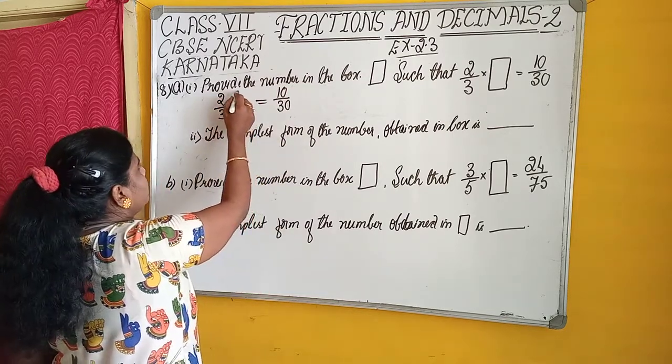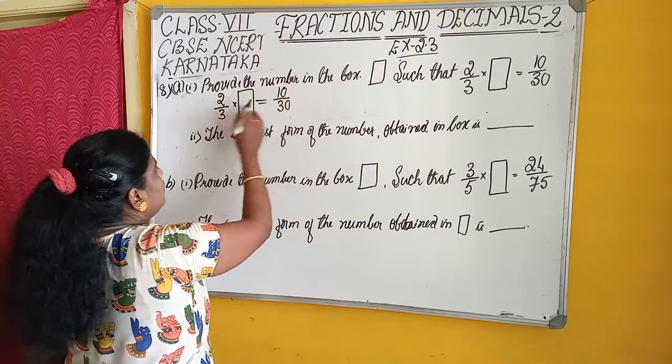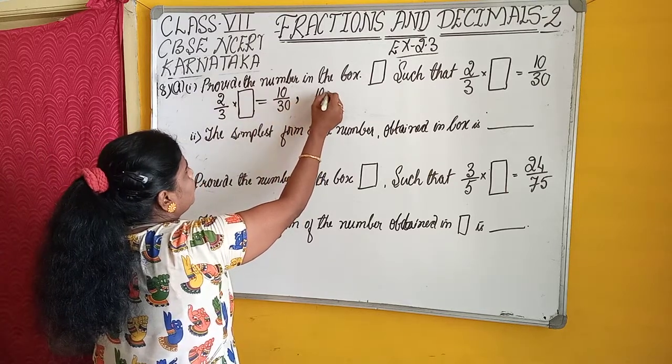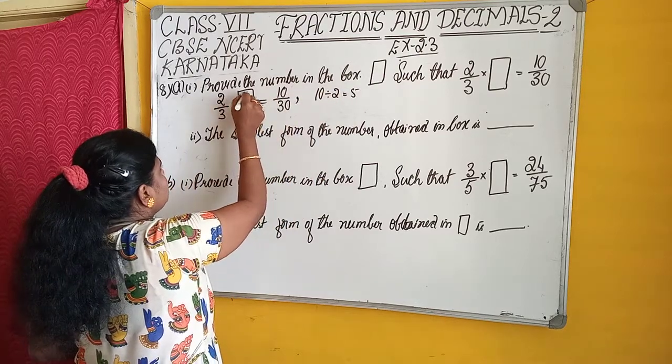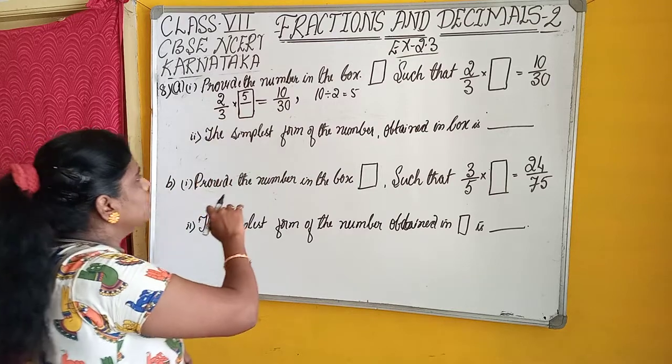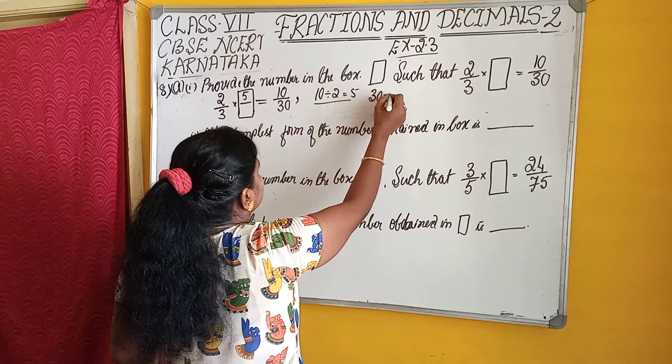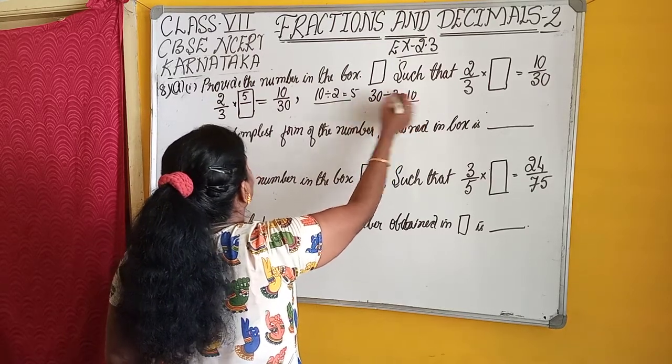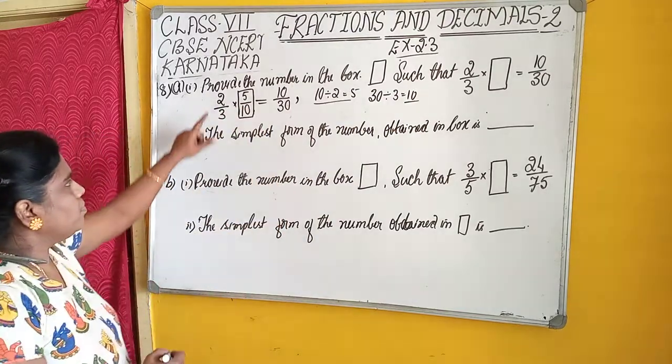Therefore, we can find the number in the box by dividing 10 by 2. That equals 10 divided by 2, which equals 5. This is the numerator. And 30 divided by 3 equals 10. That is the denominator. So we get 5/10.